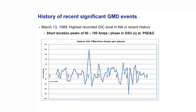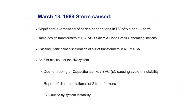Those peaks were of very short duration, about a minute or so. This storm caused significant overheating of some transformers of the same design at Public Service Electric and Gas — they had two generating stations, one in Salem and one in Hope Creek, with shell form transformers of the same design. The low voltage leads on those designs overheated, and one transformer was taken out of service a week later. None of them actually failed, but they had a lot of overheating.